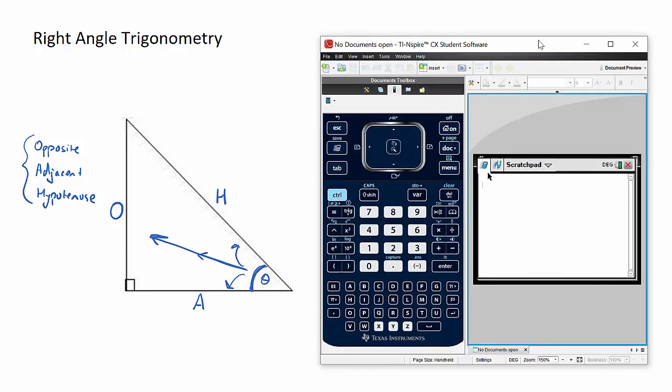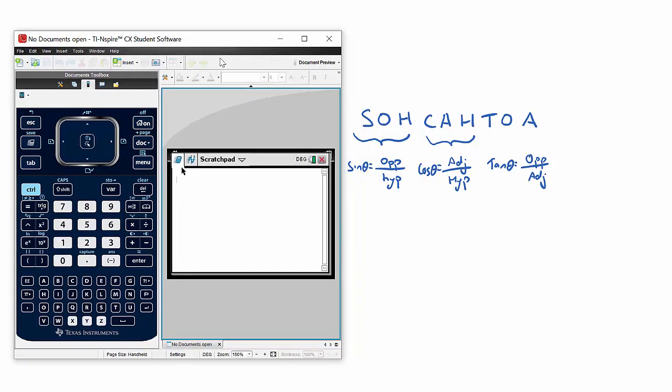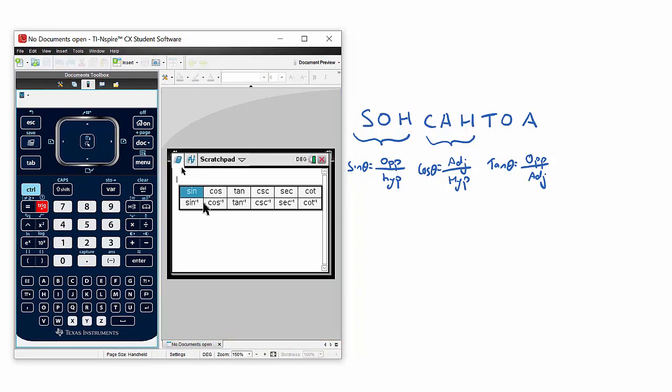And if I open my calculator up, you can see that if I go into the trig section on the left-hand side, these are our three trig ratios right here. So they all relate to this.